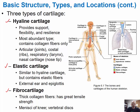Hyaline cartilage provides support, flexibility, and resilience. It is the most abundant type, found in joints, the ribs, the costal region, and the respiratory area of the larynx. Elastic cartilage is similar to hyaline cartilage but contains more elastic fibers; it is found only on the external ear and in the epiglottis. Fibrocartilage contains thick collagen fibers and has great tensile strength. We find it in the menisci of the knee and the intervertebral discs, where there is lots of compression.